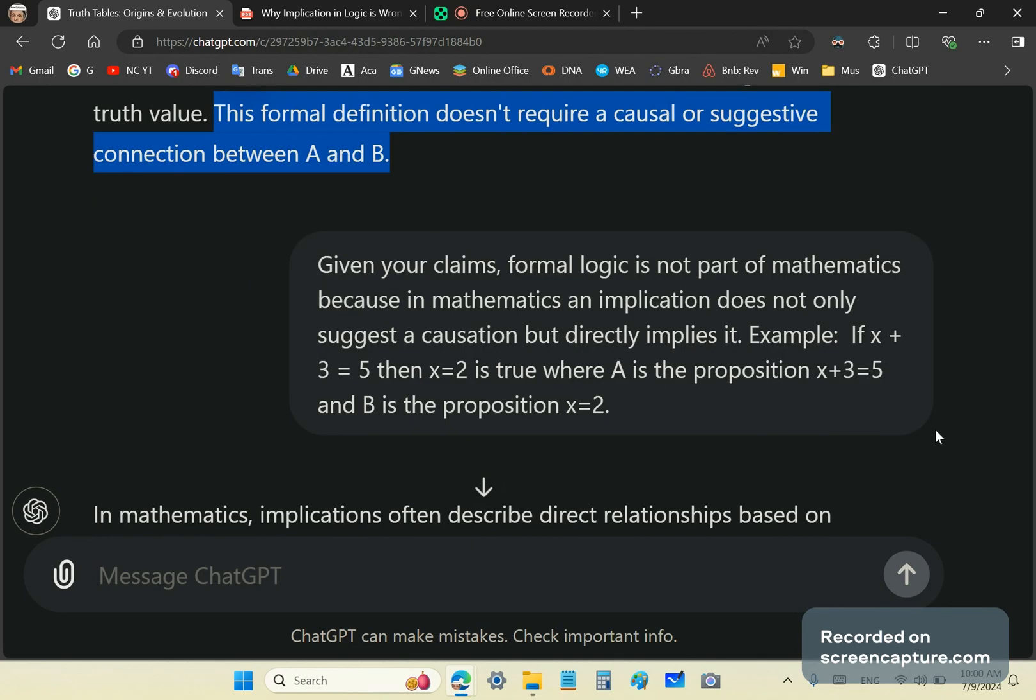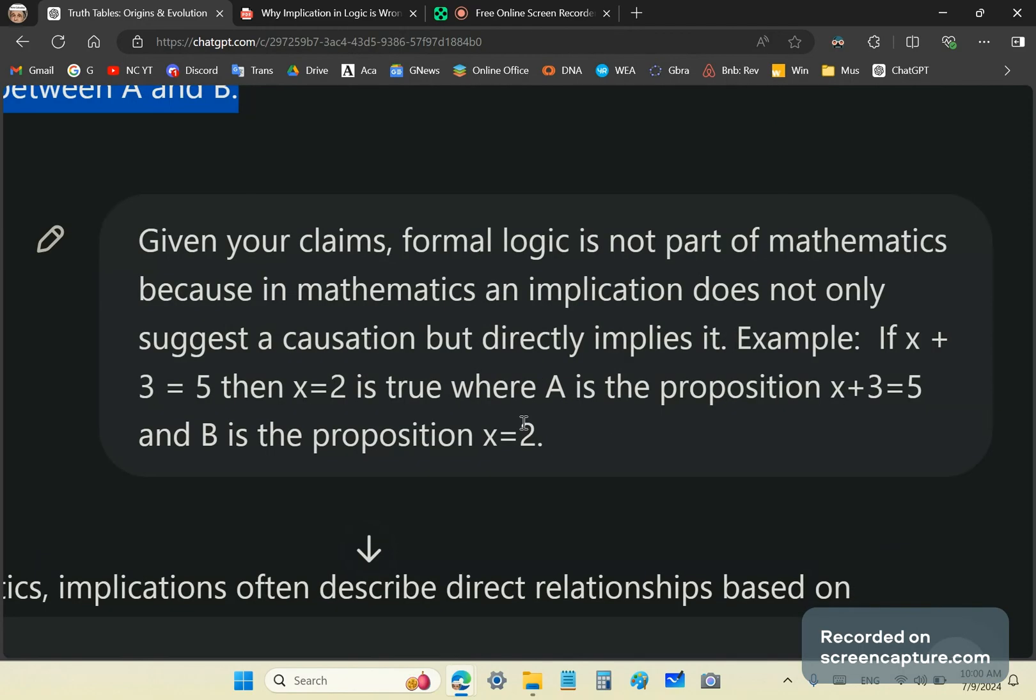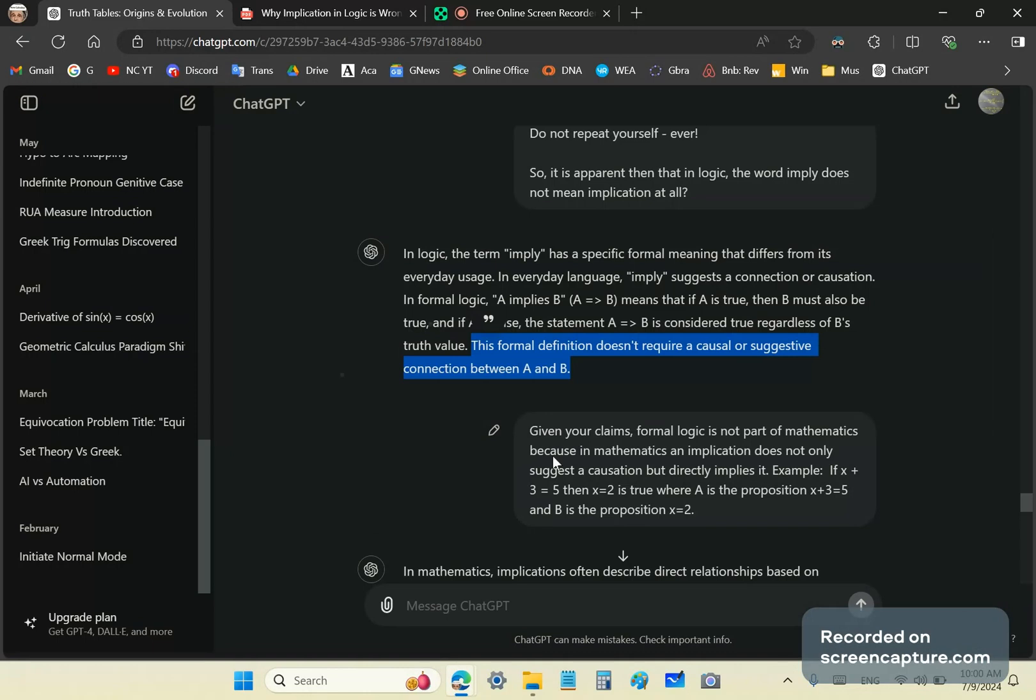If x plus 3 equals 5, then x is equal to 2 is true, where A is the proposition x plus 3 equals 5 and B is the proposition x is equal to 2. Stop your video here and just think carefully about what I've written there because GPT is about to respond to that.